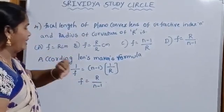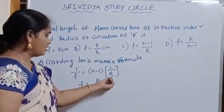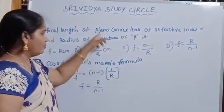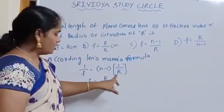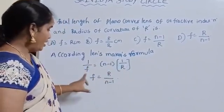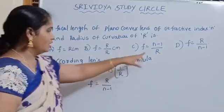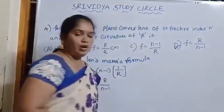First, how to identify the focal length, radius of curvature and refractive index. Plano convex means only one curved surface, then only one radius of curvature is there. 1 by f, f and reciprocal is R. Then option is B.